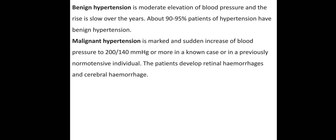Malignant hypertension is a sudden rise, where systolic pressure is more than 200 mmHg and diastolic more than 140 mmHg. So systolic sudden elevation is malignant hypertension. Benign is slow — over the years it increases little by little.